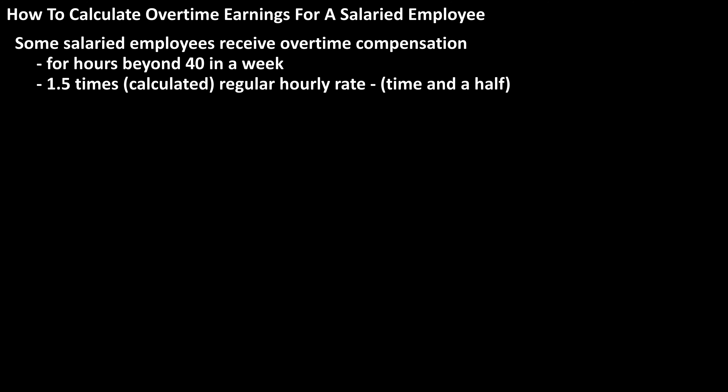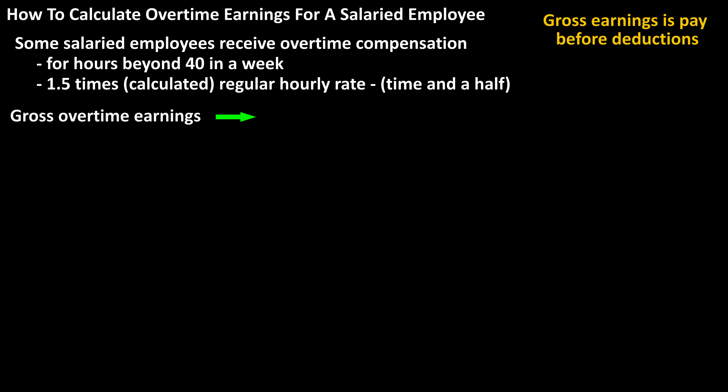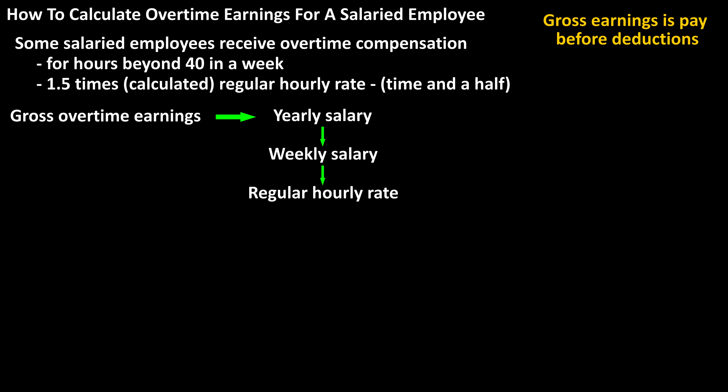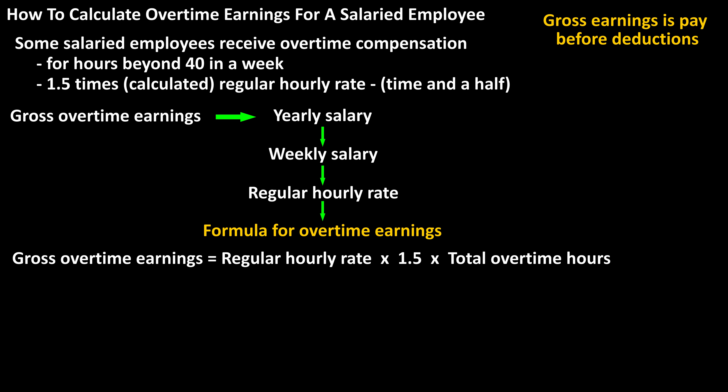To calculate a salaried employee's weekly gross overtime earnings, we first calculate their weekly salary from their yearly salary, then calculate their regular hourly pay rate from their weekly salary. And once we have their hourly pay rate, the formula to calculate their gross overtime earnings is: regular hourly rate times 1.5 times their overtime hours worked.